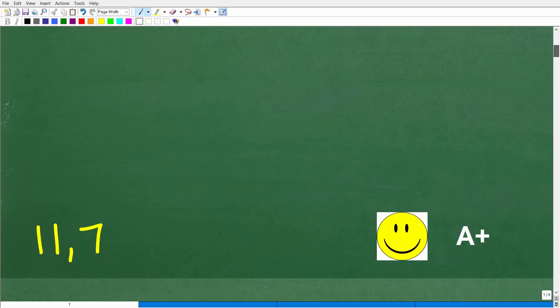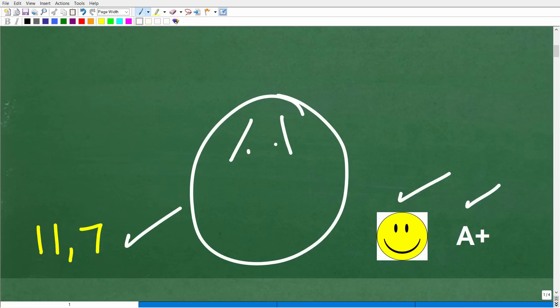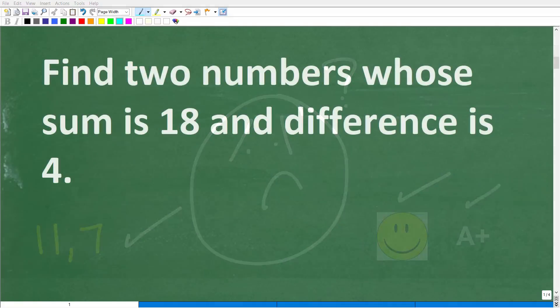The correct answer here is 11 and 7. These are the numbers. Now, if you got this right, that is fantastic. You definitely get a happy face and an A+, and you're like, hey, Mr. YouTube Math Man, I don't really understand how to solve this problem. Can you teach me? Well, I definitely can.